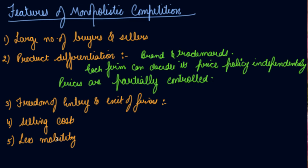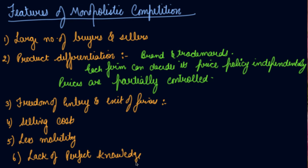The sixth feature is the lack of perfect knowledge. Both buyers and sellers do not have perfect knowledge about the factors of production. Buyers do not have perfect knowledge about the price and the prevailing same type of good in the market. So there is a lack of perfect knowledge.